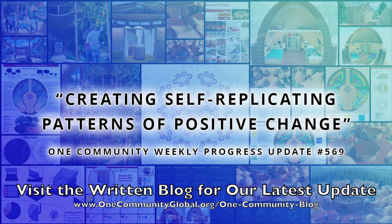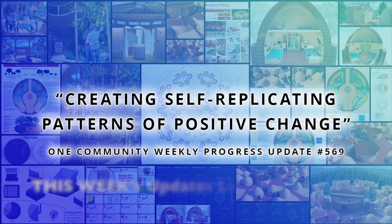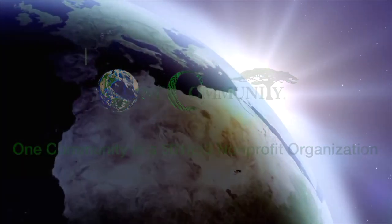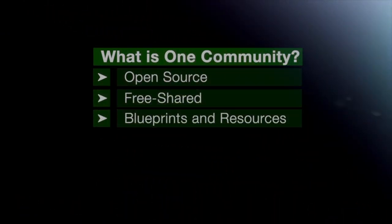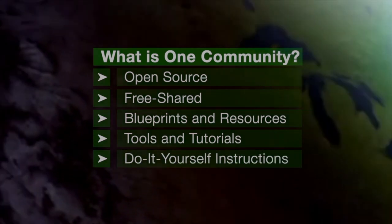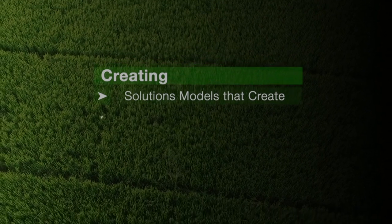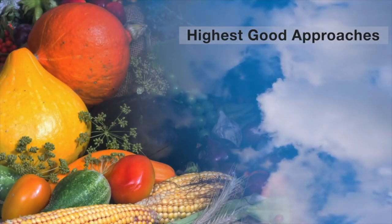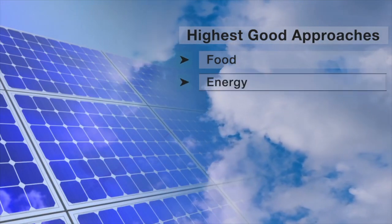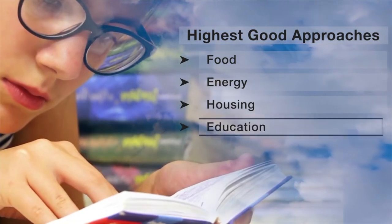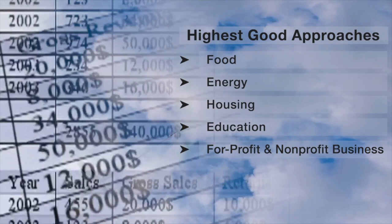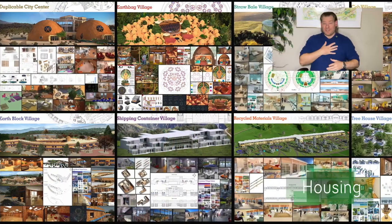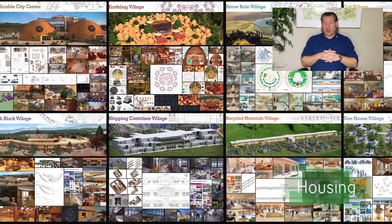Creating self-replicating patterns of positive change. One Community Weekly Progress Update, number 569. One Community is a 501c3 nonprofit organization creating open source and free shared blueprints and resources, tools and tutorials, and do-it-yourself instructions for highest good living — creating solution models that create additional solution-creating models in the service of all life on this planet. Jay here again for our February 12, 2024 edition of our Weekly Progress Update.